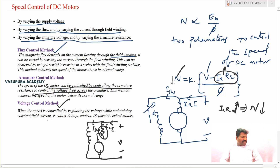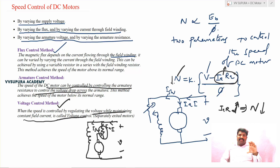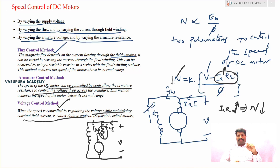When speed is controlled by regulating the voltage while maintaining a constant field, it is called the voltage control method. In this method, the field flux or field current is kept constant. By reducing or increasing the supply voltage level, the speed is automatically controlled. To maintain the field winding at a constant supply, a separately excited configuration is used.